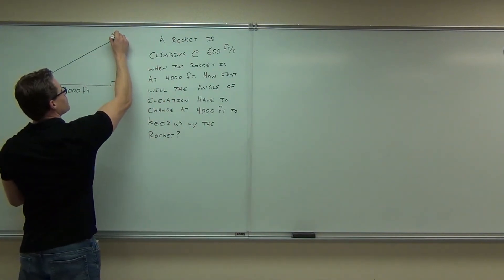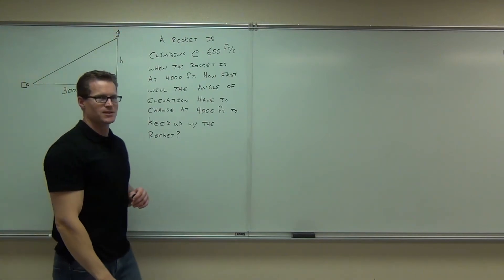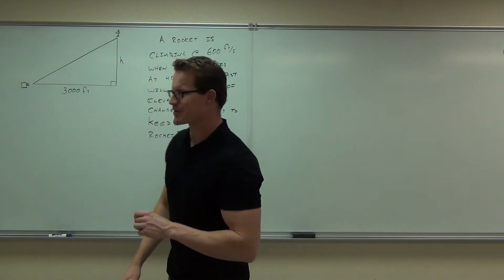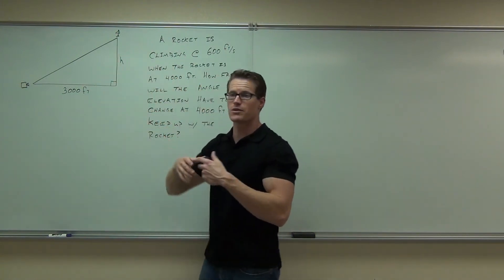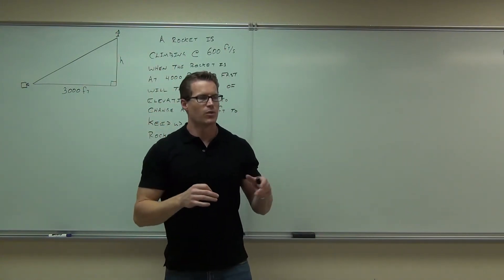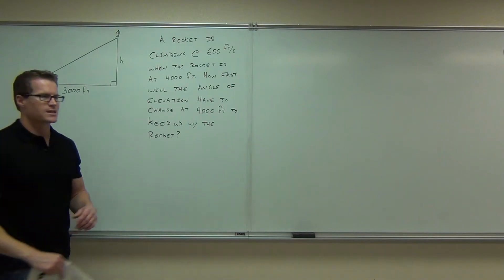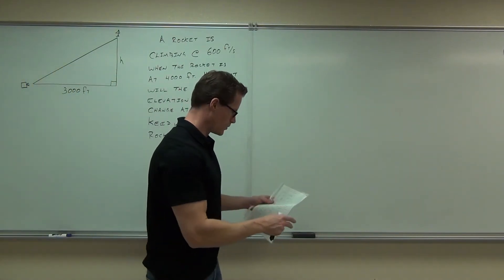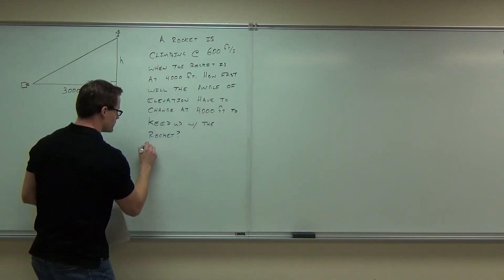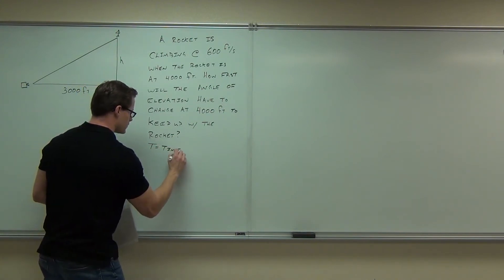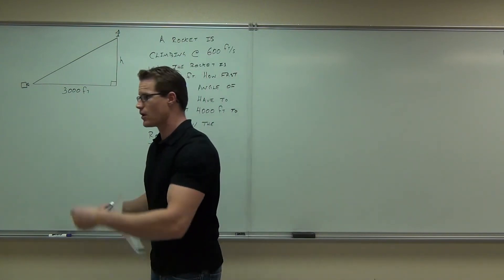So our rocket's way up here. I don't know how to draw a rocket — it's a flying arrow. I'm a math dork. So we've got this rocket flying. It's going to be H feet high. We're going to figure out when H is 4,000 what we're going to be doing on this. The first thing we've got to do is assign some letters to what we're working with. Time is definitely one of them, so T for time. Height — H — we already have that on there.